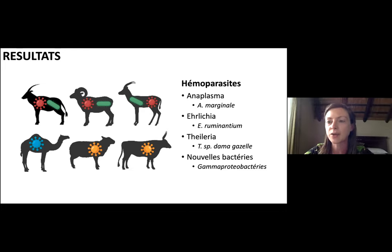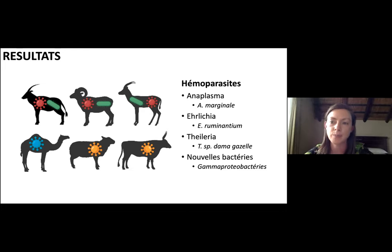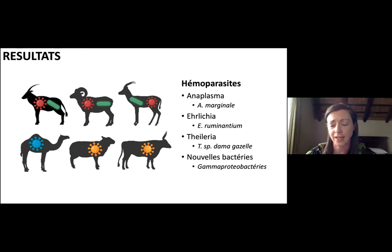We've also found species that we typically see in antelope and other ungulates, such as Theileria species. Additionally, we've found some evidence of novel bacteria that aren't very well characterized, but there are reports of these bacteria or closely related bacteria causing disease both in humans and in wildlife. These are examples of emerging infectious diseases, which we want to investigate more closely.